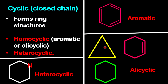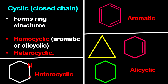For the heterocyclic example: remember where the lines meet you have carbon atoms. Counting them gives one, two, three, four, five carbons — and then the sixth position is a nitrogen. The presence of this nitrogen makes the structure heterocyclic, because the ring is not purely carbon; it contains a different element.